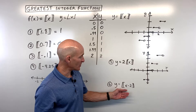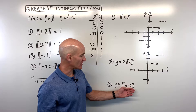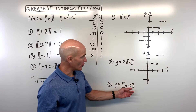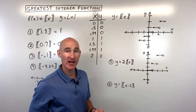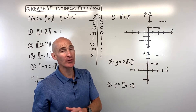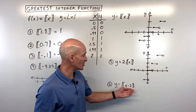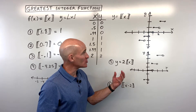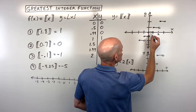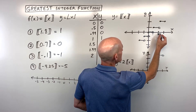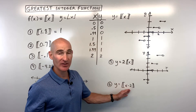For the next example, y equals the greatest integer function of x minus 2. Notice the minus 2 is grouped with the x, which means it's going to affect the horizontal direction. But remember, when it's grouped with the x, it has the opposite effect — so it's not going to shift left 2, it's actually going to shift 2 to the right. We take the basic graph and shift it 2 to the right, so it starts here and goes up like that.